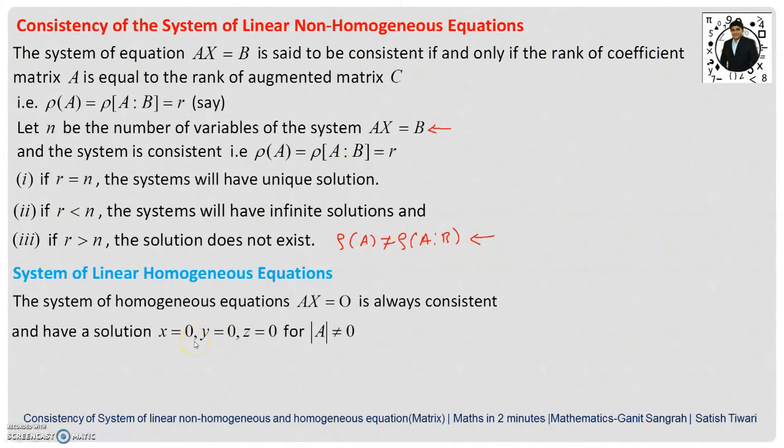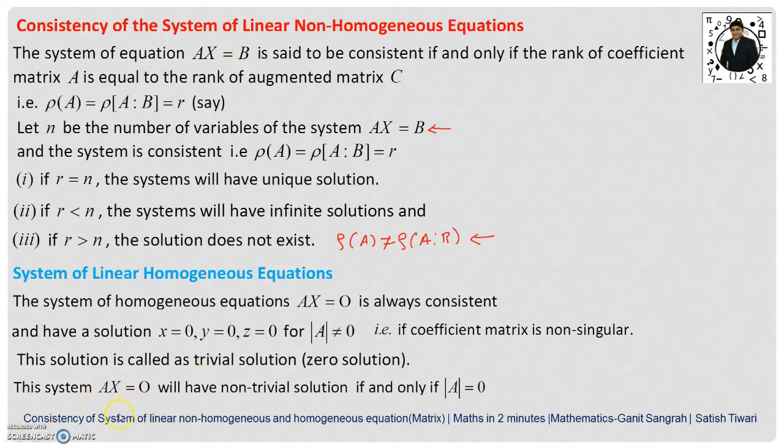Here I have considered three variables and for determinant of A not equals 0, that is the coefficient matrix is non-singular. If the coefficient matrix is non-singular, then this homogeneous system will possess a zero solution, also called as the trivial solution. The system Ax equals 0 will have a non-trivial solution if and only if the determinant of A equals 0, that is if coefficient matrix is singular.